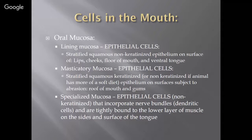Versus your masticatory mucosa, which is also made up of epithelial cells. This is stratified squamous keratinized, unless the animal is on a soft diet, then they're non-keratinized. This is the epithelium on the surfaces subject to abrasion, so the roof of your mouth and gums. Specialized mucosa are epithelial cells — non-keratinized — that incorporate nerve bundles or dendritic cells, and they're tightly bound to the lower layer of muscle on the sides and surface of your tongue. It's important to understand why these differences exist.